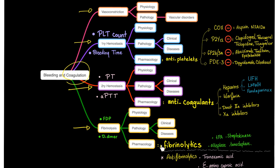When it comes to fibrinolytics, also known as thrombolytics, also known as clot busters, you have TPA, streptokinase, alteplase, necteplase, reteplase, etc. If I have too much fibrinolysis, I can give you anti-fibrinolytics — so this is not a coagulation problem, that's a bleeding problem. You give tranexamic acid and epsilon aminocaproic acid.